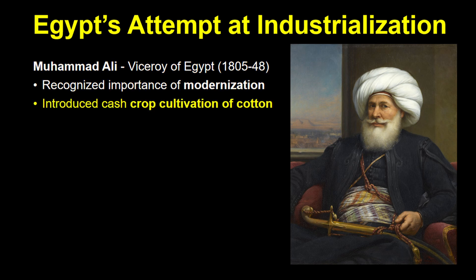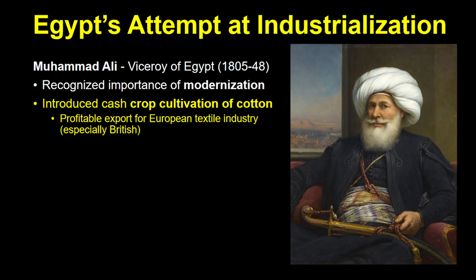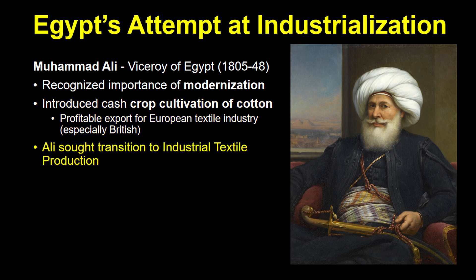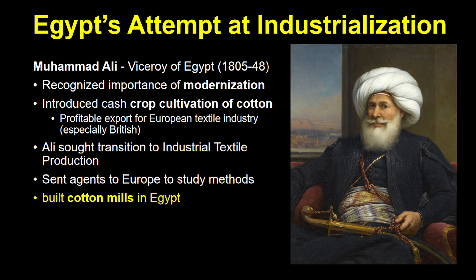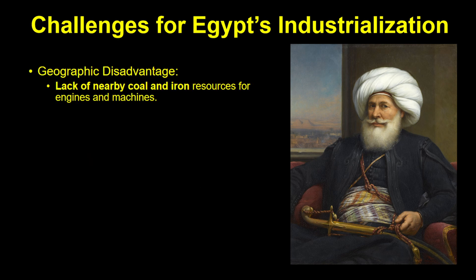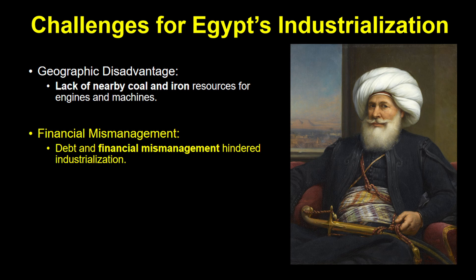Ali first introduced the cultivation of cotton as a cash crop, which was highly profitable to sell as a raw material to industrialized nations, especially the British, for their textile production. But Ali wanted to go beyond cash crops and transition into the industrial textile business. He sent agents to European countries to study their methods and built cotton mills in Egypt. Despite some initial successes, Muhammad Ali's initiative largely failed for a few reasons. Egypt did not have the same geographic advantages as Europe and America — there wasn't enough coal or iron nearby to fuel the engines and build the machines. Another reason was debt and financial mismanagement by Ali and especially his successors, and there were other reasons related to economic imperialism.